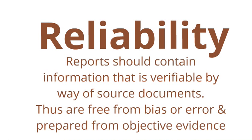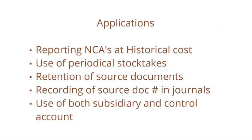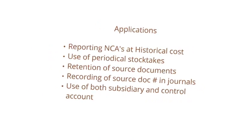Reliability: reports should contain information that is verifiable via source documents, which goes hand in hand with the historical cost principle. We do stock takes to provide an accurate measure of assets and verify the value of stock on hand. Source documents are retained in the business for a minimum of five years to ensure reports are free from bias or error. All journals record the source document, including the general journal with memo numbers. The use of control and subsidiary accounts provides a built-in cross-checking mechanism, further ensuring reliable financial information.